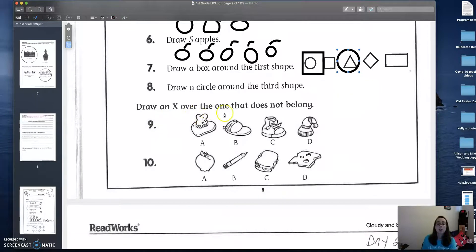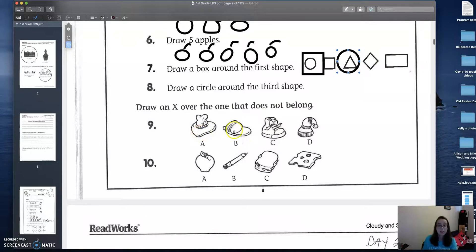Okay. Draw an X over the one that does not belong. Hmm. So let's look. This is a hat. This is a baseball hat. This is a shoe. And this is a snow hat. So which one is not like the others? Letter C. So we're going to draw an X there.